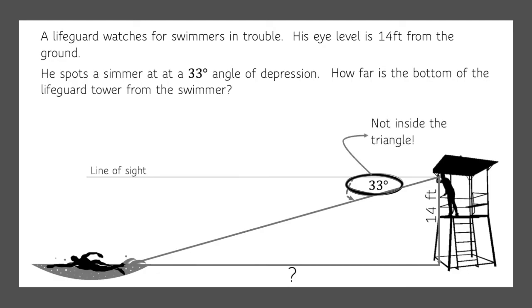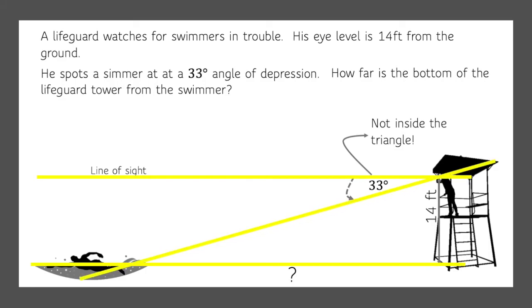So what do we do? Well, what we do have is two parallel lines cut by a transversal, and we've got two alternate interior angles which we know are congruent. So we know that this angle is also 33 degrees.